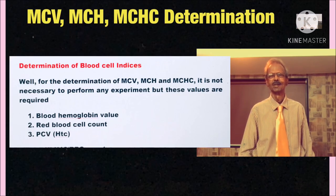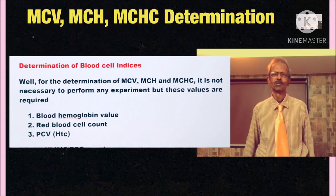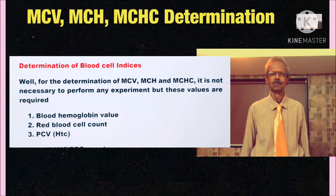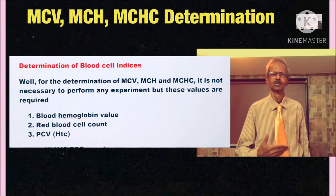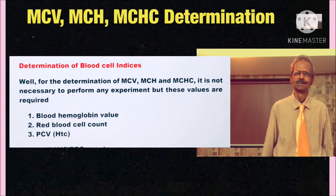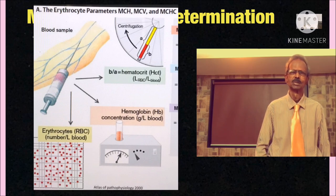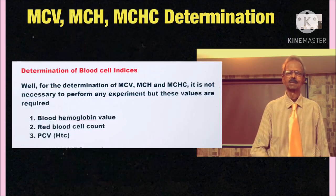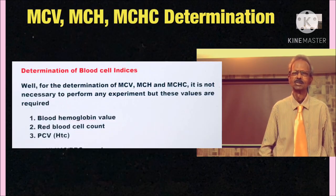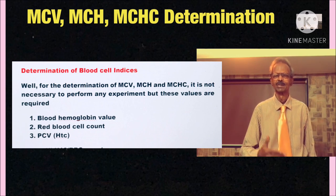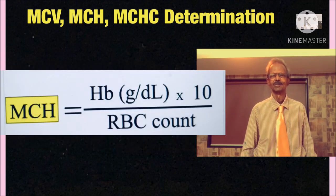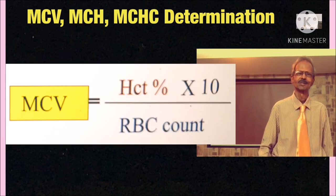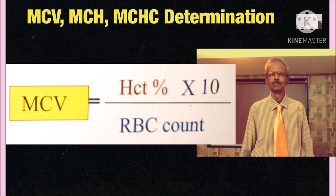Now determination of blood cell indices. Well for the determination of MCV, MCH and MCHC, it is not necessary to perform an experiment. But these values are required: Blood hemoglobin value, Red blood cell count, PCV that is hematocrit. And the formula used for MCH is equal to hemoglobin multiplied by 10 divided by RBC count. MCV is equal to PCV percentage divided by RBC count. And MCHC is equal to hemoglobin concentration divided by PCV percentage.